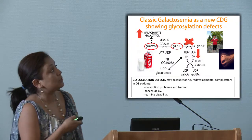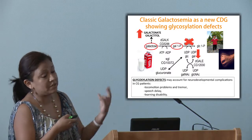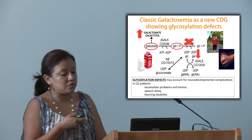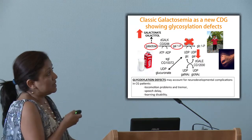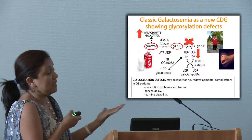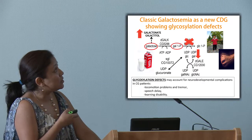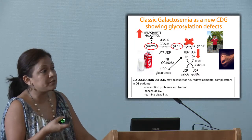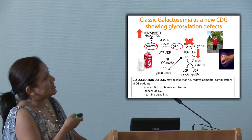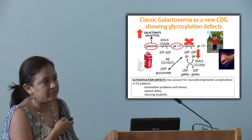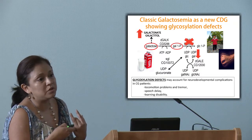In classic galactosemia, there is essentially no activity — or very close to zero activity — of the second enzyme, GALT. As a consequence, you expect a buildup in the intermediate metabolite: the metabolite formed right before the enzyme defect will increase. Galactose and other metabolites also start accumulating, and these have been shown to be toxic. Like CDGs, there is no clear understanding of this disorder, and these patients also have striking neurological problems.